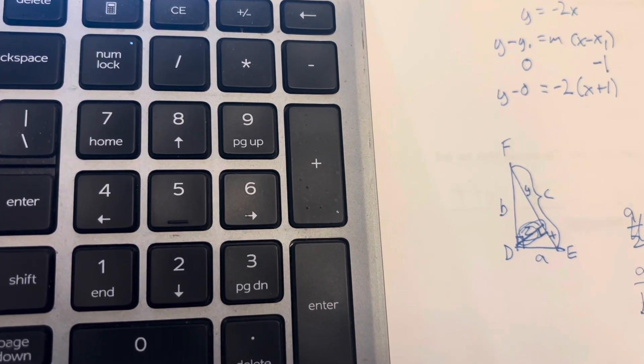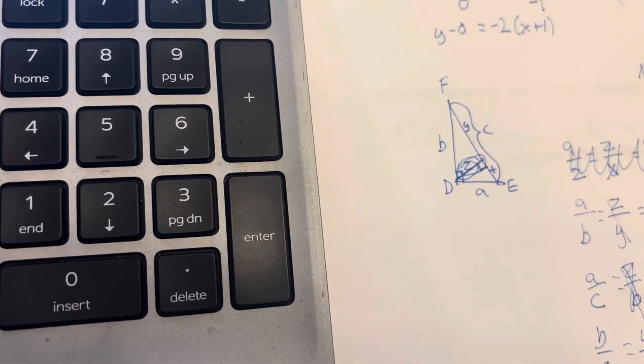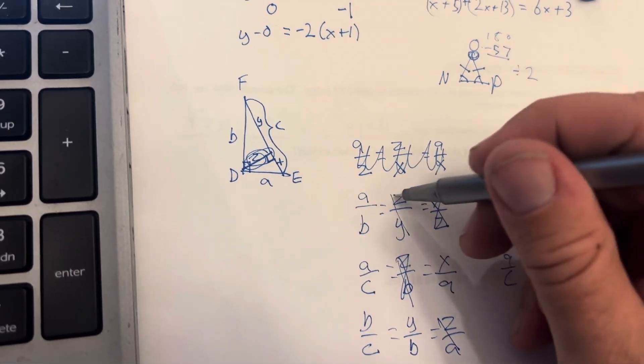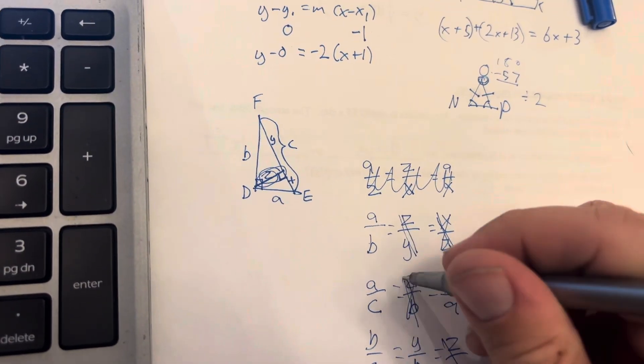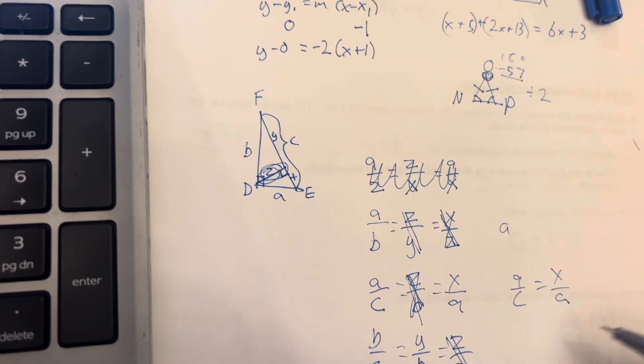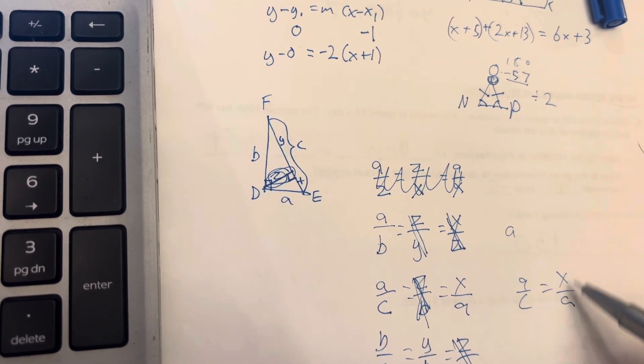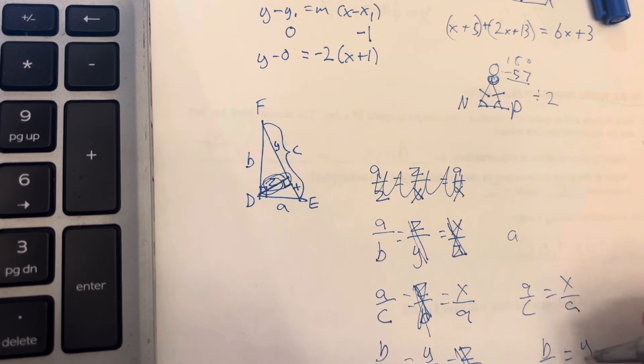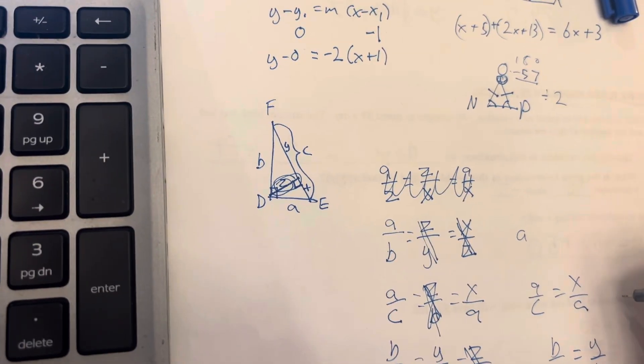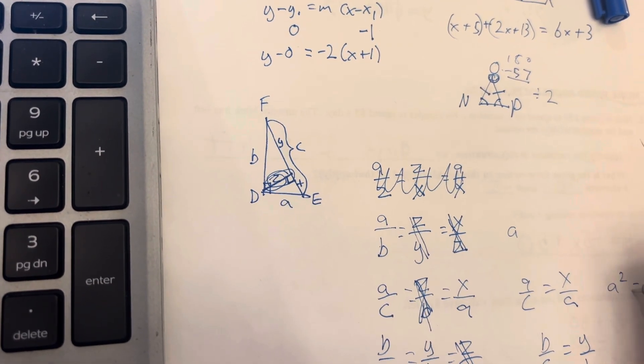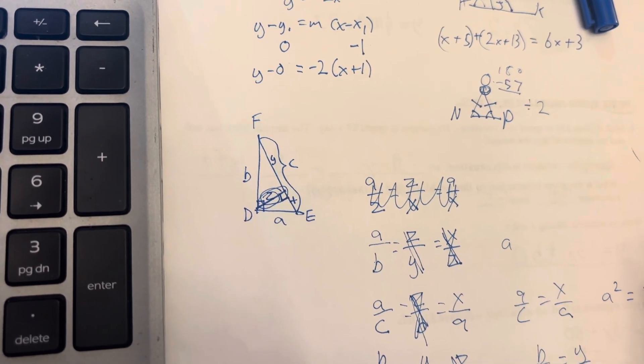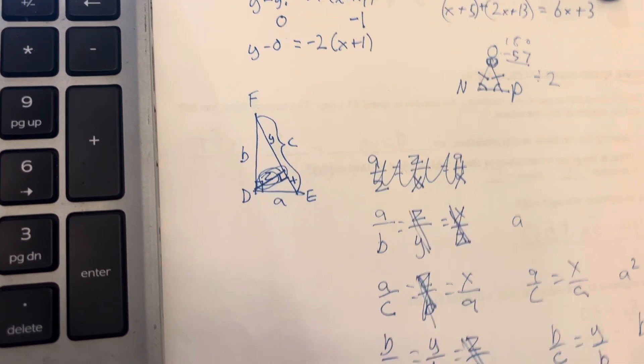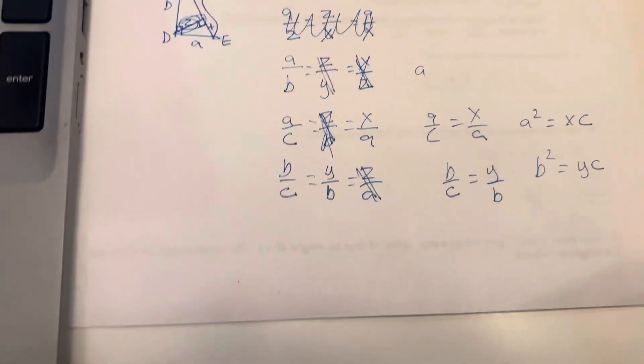So, I have A over C is equal to X over A. I'm sorry, I'm going to move this. I'm leaving off all the ones with Z because I'm not wanting to use the altitude in this. So, I've got A over C is equal to X over A. I've got B over C is equal to Y over B. So, I've got A squared equals X times C, and I've got B squared is equal to Y times C. Okay? This is a proof.